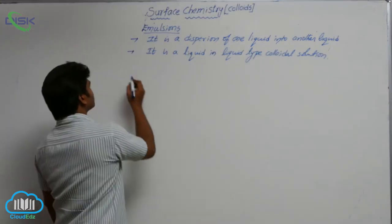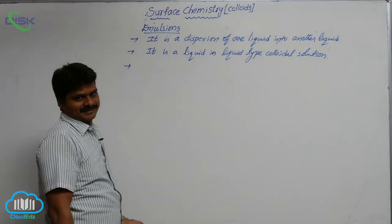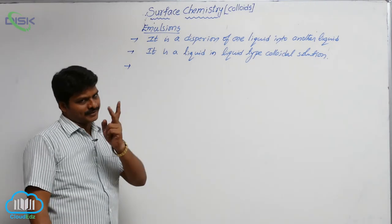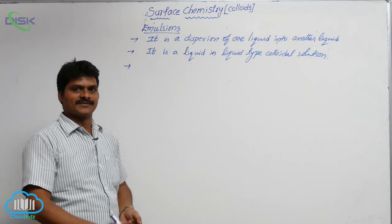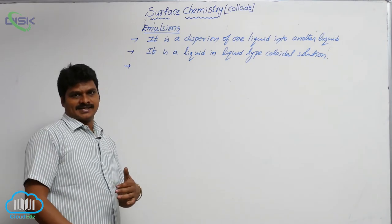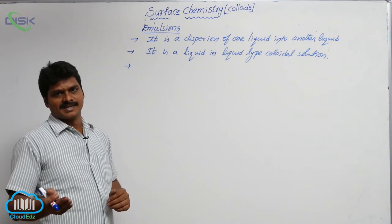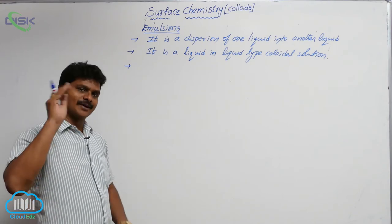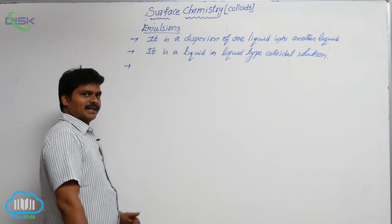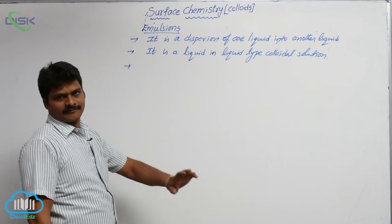In an emulsion, both the dispersal phase and dispersion medium are liquids. Any colloidal solution contains two phases — one is dispersal phase and the other is dispersion medium. Dispersal phase is like solute in a true solution, and dispersion medium is like solvent in a true solution. Here, both dispersal phase and dispersion medium are liquids.